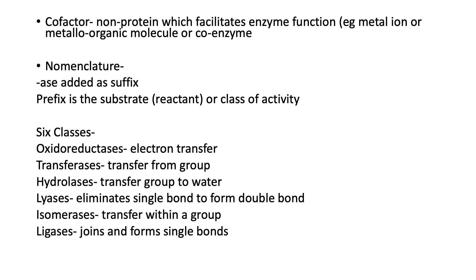These enzymes additionally have cofactors. A cofactor is usually a particular metal — a metal ion — or often it's a metal-organic molecule, or even a coenzyme, so you get two enzymes working together.